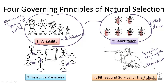Reproductive success was key to this principle of survival of the fittest. So only if you were able to pass on to your offspring your traits would that trait continue to thrive and exist in a population. Other traits that conferred a disadvantage would diminish in the population.